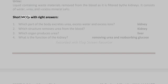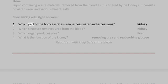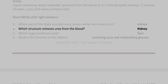Short MCQs with right answers. 1. Which part of the body excretes urea, excess water, and excess ions? Kidney. 2. Which structure removes urea from the blood? Kidney.